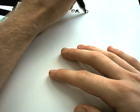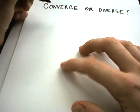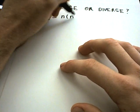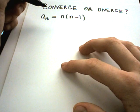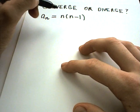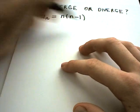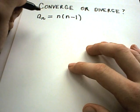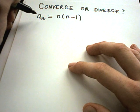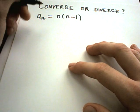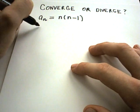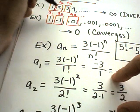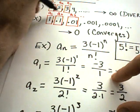For the first example, suppose we have the sequence defined by a_sub_n = n times (n minus 1). A good idea when you have no feeling about what's going on is to start plugging in numbers — plug in 1, plug in 2 — to get intuition. As n gets bigger and bigger (a_sub_1, a_sub_2, a_sub_3, ...), we look at the limit as n goes to infinity.